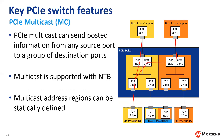PCIe multicast is a feature of switches that allows sending posted information from any source port to a group of destination ports. Multicast is supported with non-transparent bridging, so the destination ports do not need to be in the same virtual switch partition. Multicast address regions can also be statically defined for security.